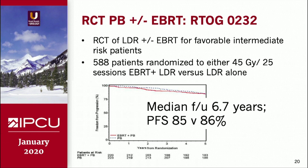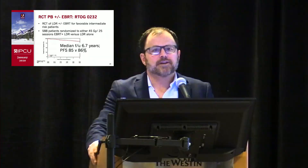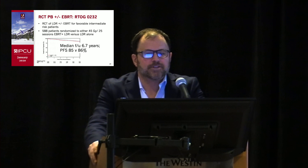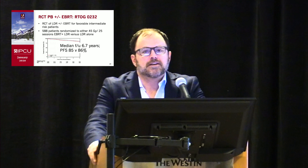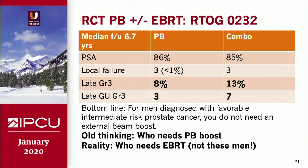Moving on to RTOG 0232 with a mostly favorable intermediate-risk group: conceived in 2002, the experimental question was whether we could get away with prostate brachytherapy alone versus combination external beam with hormones. We randomized 588 patients — combination versus seeds alone — and at a median follow-up of 6.7 years we have nearly identical results. PSA results are the same, local failure rates are rare, and there's less toxicity with monotherapy. The stricture rate was about 3%. The bottom line: for favorable intermediate-risk men, you do not need an external beam boost.